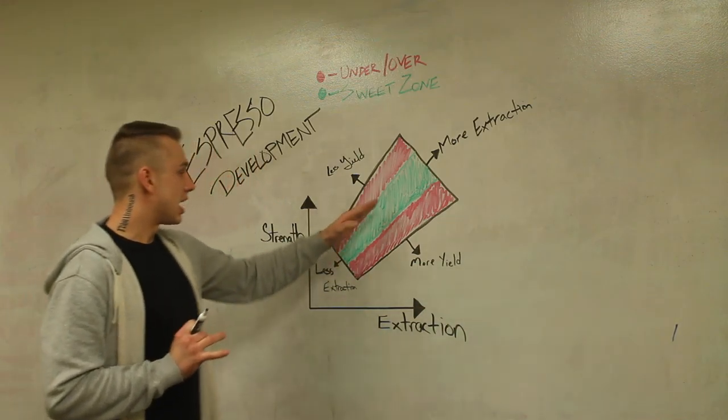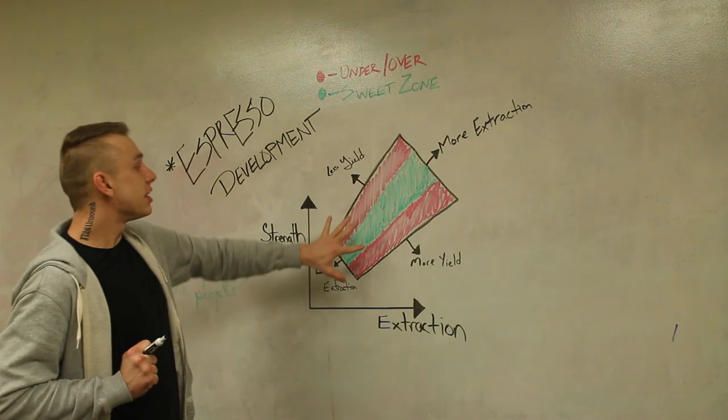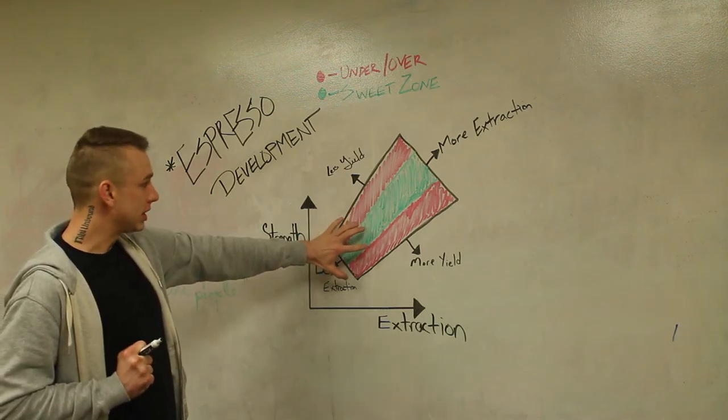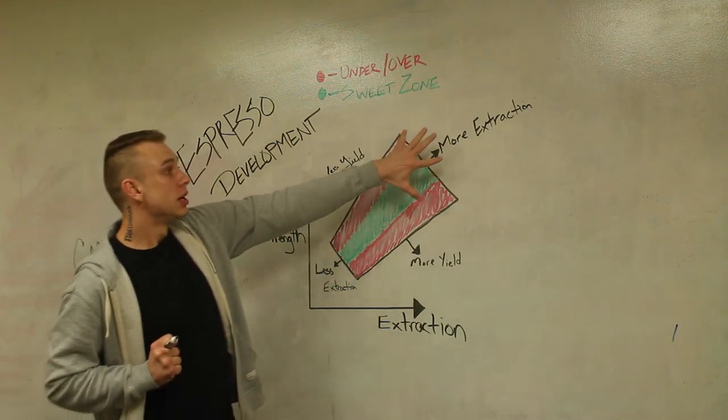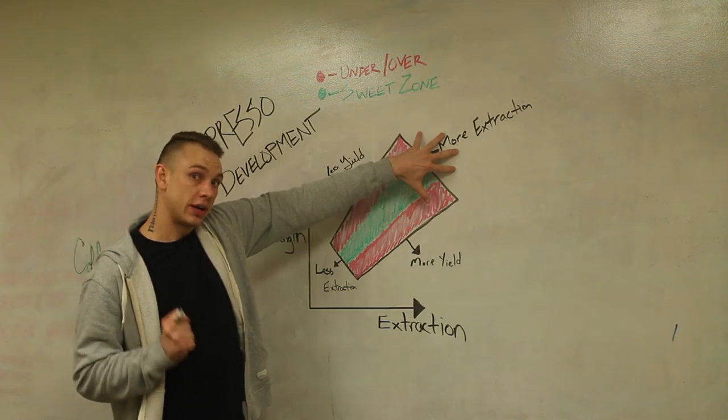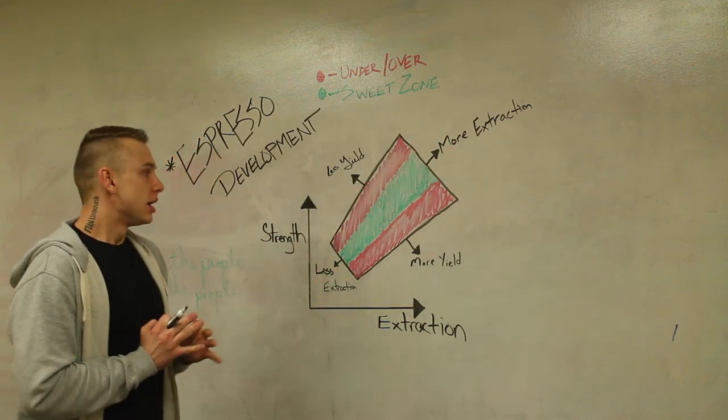However, a common misconception that actually happens is just because this graph goes up and the extraction goes up doesn't actually mean that the time goes up as well. You can have a 35 second pull right inside here as opposed to a 28 second pull with a greater yield. All of that is going to be determined by the surface area of the actual coffee that you grind and the amount.